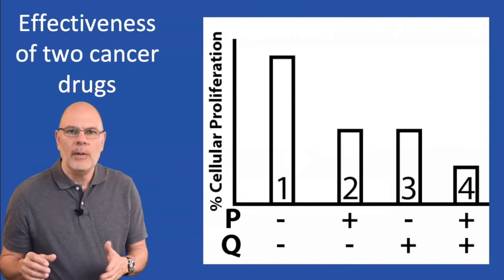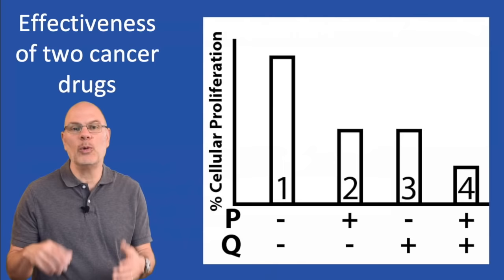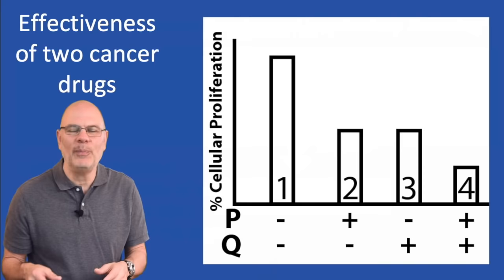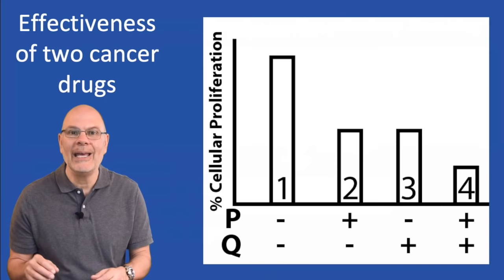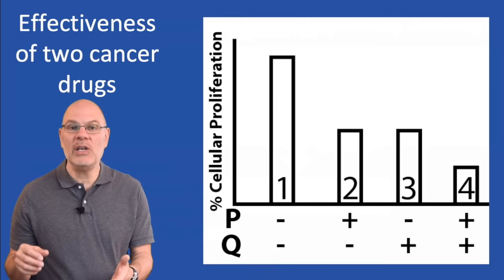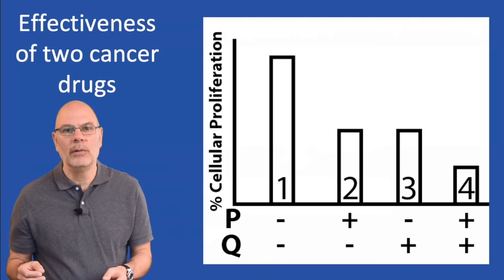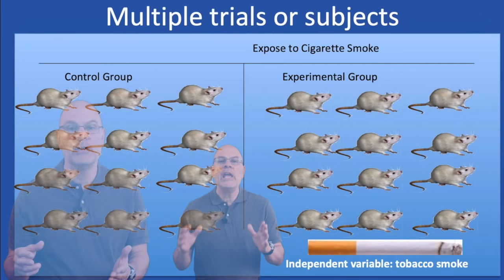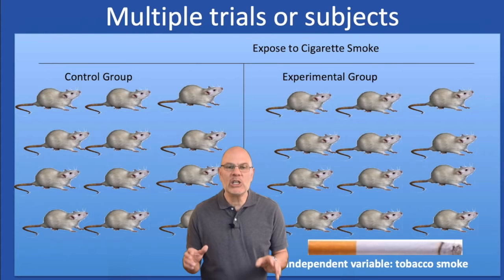Let's look at another cancer-related study designed to test the effectiveness of two drugs, P and Q, on controlling cell proliferation, which is one aspect of cancer. If there's a plus sign on the row for that drug, it means that drug is present in an experimental trial. If there's a minus sign, it means that the drug is absent. In this case, the dependent variable is the amount of cellular proliferation. The control group is group one, the group that's exposed to neither drug. Here's another feature of a well-designed experiment: lots of trials, many experimental subjects, enough so that you can generate an average result and determine the spread of the data.